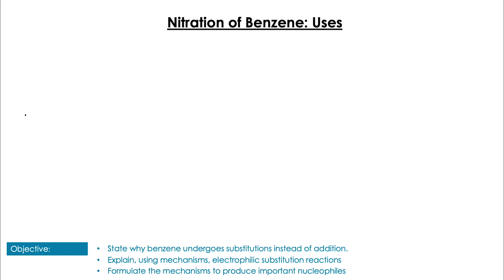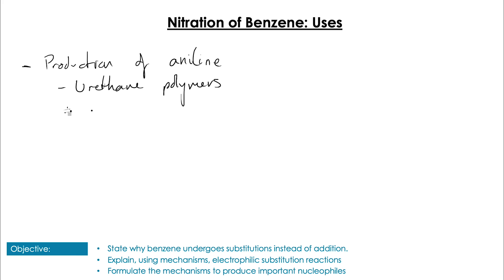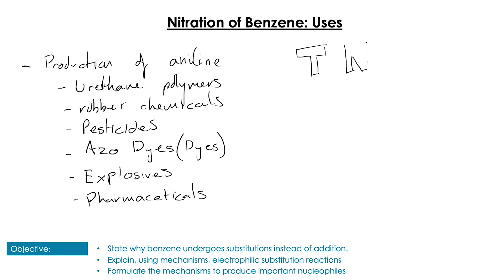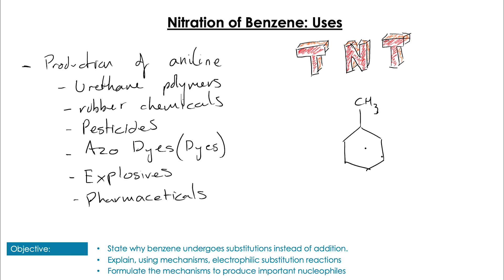Nitration is really useful because nitrobenzene is used in the production of aniline. And aniline has many industrial uses, including polymers, rubbers, pesticides, azo dyes, explosives, and pharmaceuticals - a wide variety of uses. A famous use of nitration is the production of TNT, a very commonly known explosive and one of the first high explosives. This takes toluene, which is the methyl group on the benzene ring, and nitrates it three times, giving a very reactive and very explosive structure.